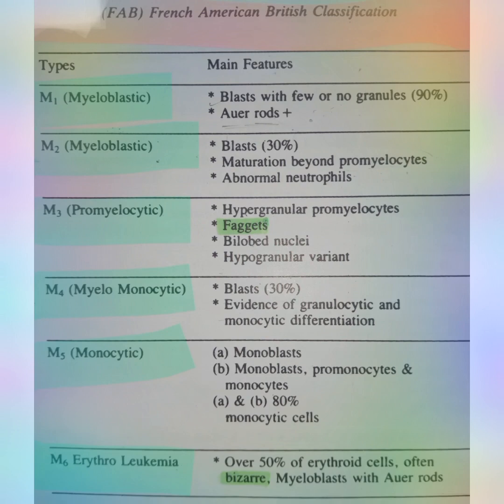The last type is erythroleukemia. In erythroleukemia there will be over 15 percent erythrocytic cells, often bizarre, and myeloblasts with Auer rods. Along with leukocytes you will see some red blood cells which are abnormal. Normally it should be pure leukocytes, but since there are no pure leukocytes, it comes under this category. This is all about the FAB classification - I hope you understood it. Thank you so much for watching.